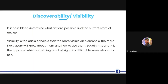The first principle of interaction design is discoverability and visibility. Is it possible to determine what actions are possible and what is the current state of the device? Visibility is a basic principle: the more visible an element is, the more likely the user will know about it and how to use it. Equally, when something is out of sight it is difficult to know about and use. We need to make features more discoverable and visible so users get a clear understanding of what is available.